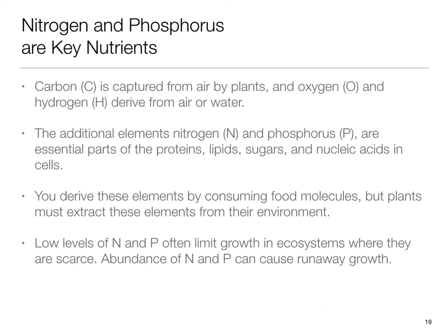Although scientists have identified 118 elements, only a few are especially common. Carbon is captured from air by green plants, and oxygen and hydrogen are derived from air or water. The most important additional elements are nitrogen and phosphorus, which are essential parts of the complex proteins, lipids, sugars, and nucleic acids that keep you alive. Your cells use many other elements, but these are the most abundant. You derive all these elements by consuming molecules produced by green plants, which must extract these elements from their environment. Low levels of nitrogen and phosphorus often limit growth in ecosystems where they are scarce, while abundance can cause runaway growth. In fertilizers, these elements often occur in the form of nitrate, ammonium, and phosphate. Later in this chapter, we'll learn about how carbon, water, nitrogen, and phosphorus circulate in our environment.